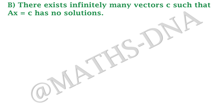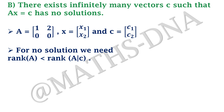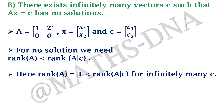For Option B: there exist infinitely many vectors C such that AX = C has no solutions. For no solutions we need rank(A) < rank([A|C]). Here rank(A) = 1, and for infinitely many choices of C the augmented matrix rank will exceed rank(A). So Option B is correct.